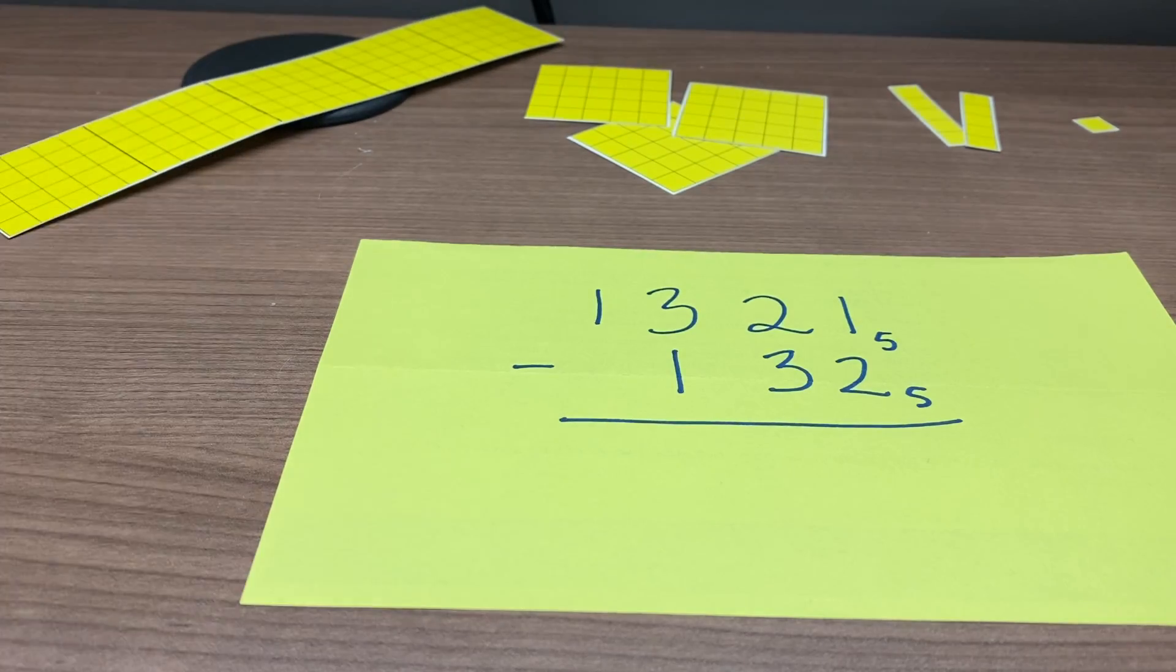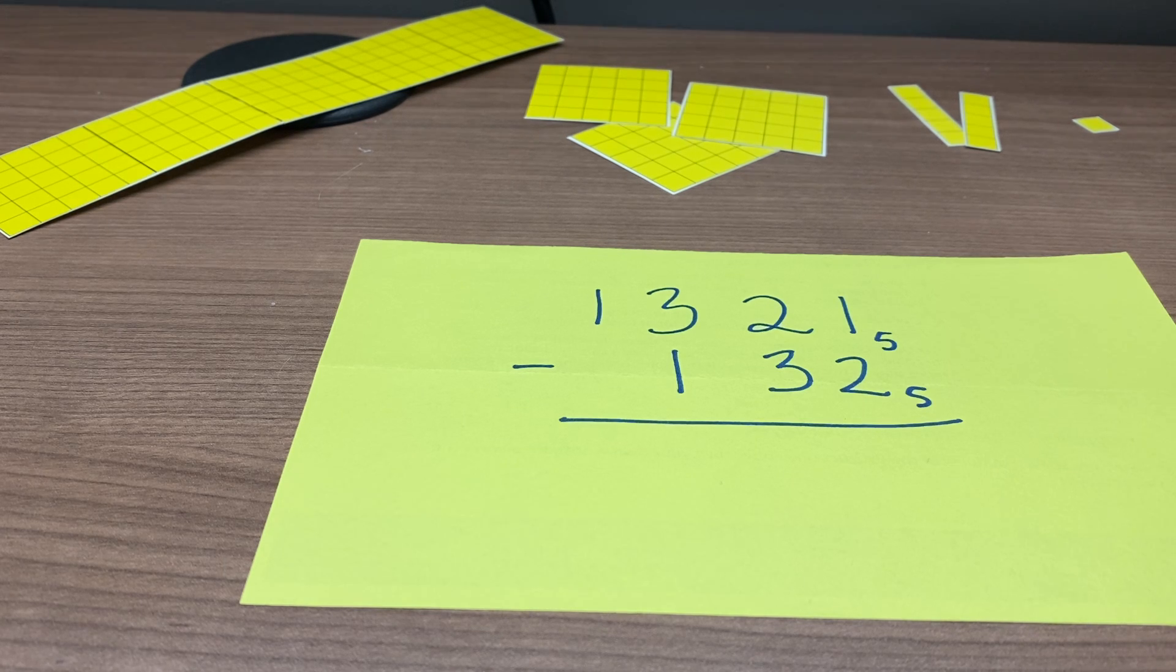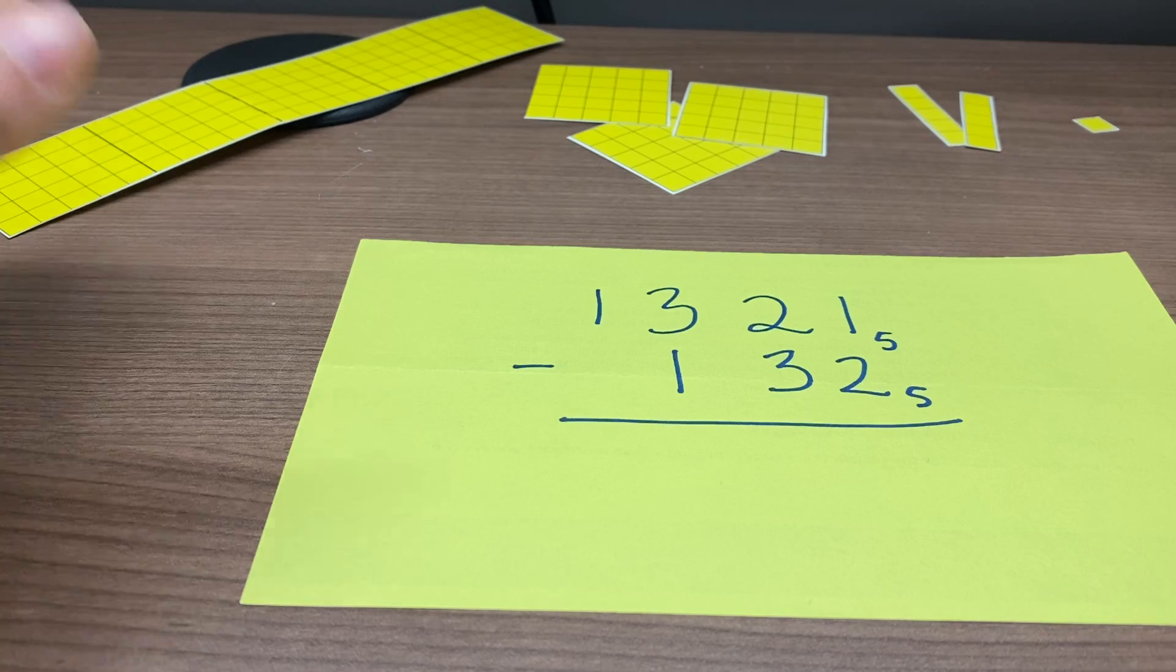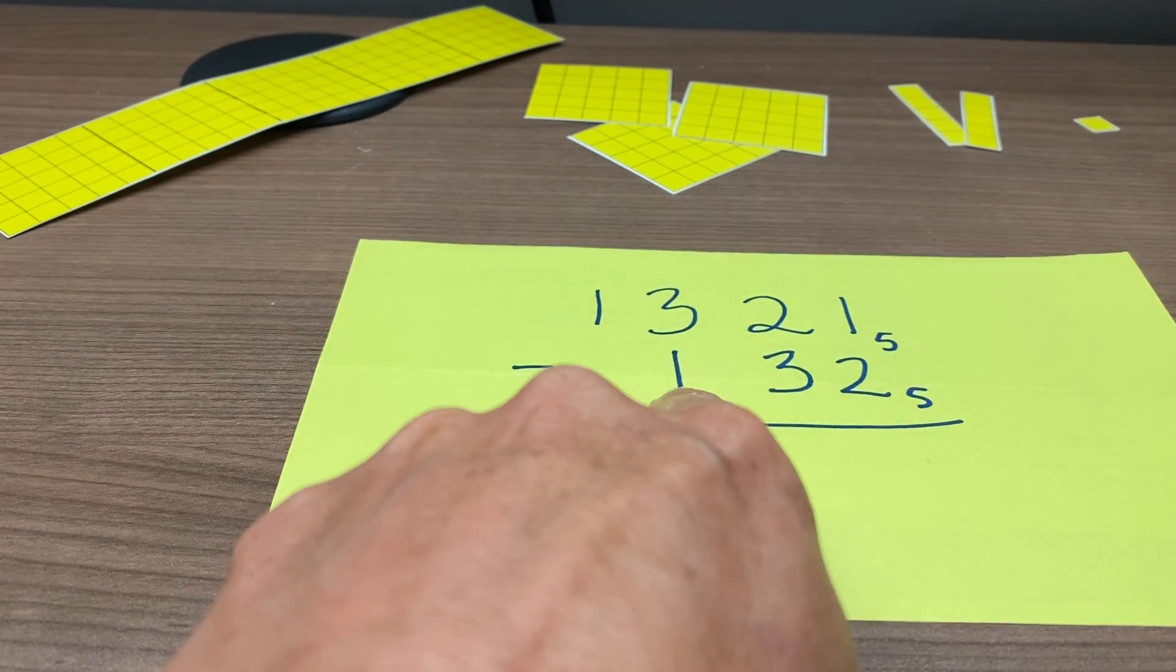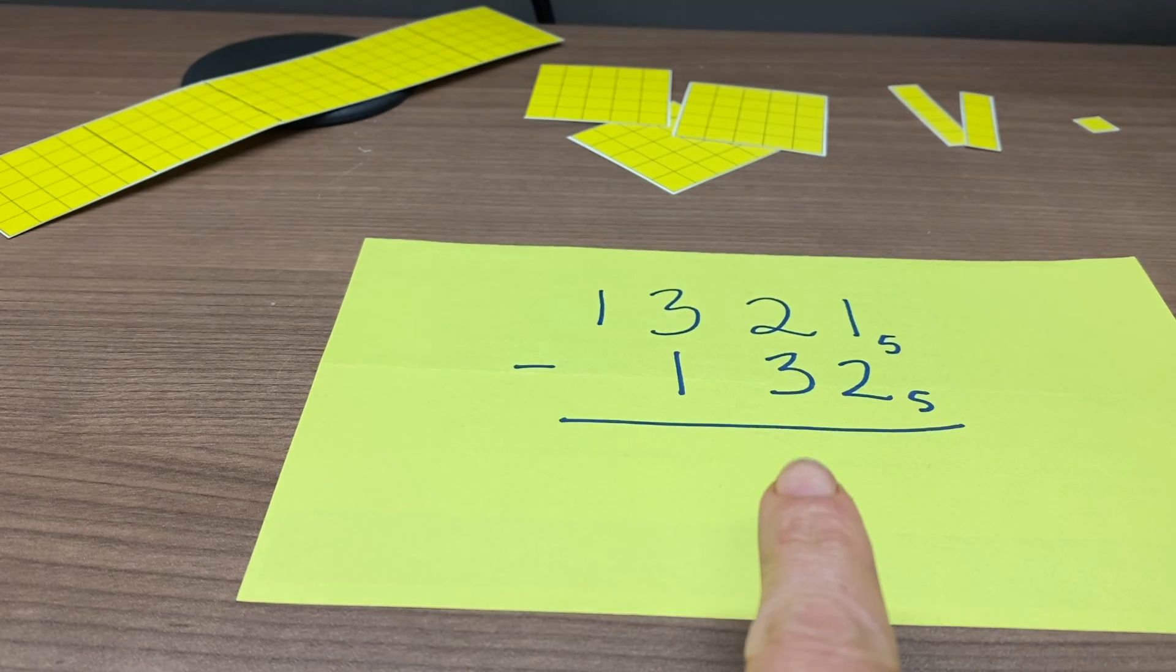All right, so those are the first four place values in base 5. So we've built our top number because this is subtraction, so we want to build that first number, and then we're going to try to take off the table the required amounts in the bottom number.